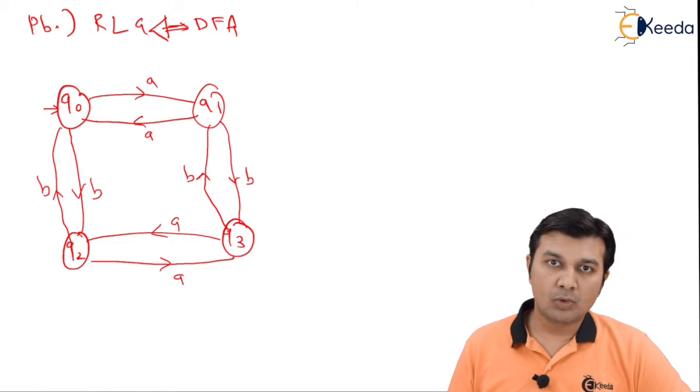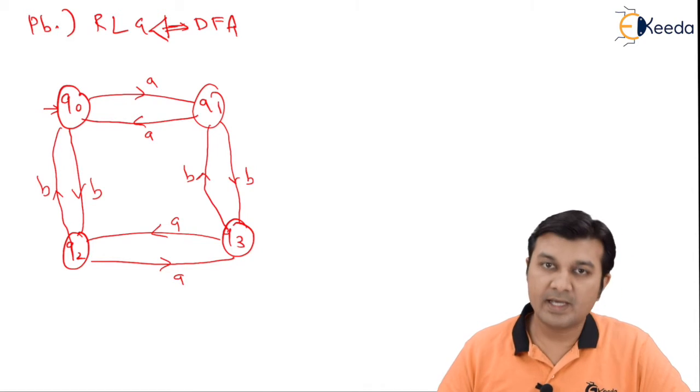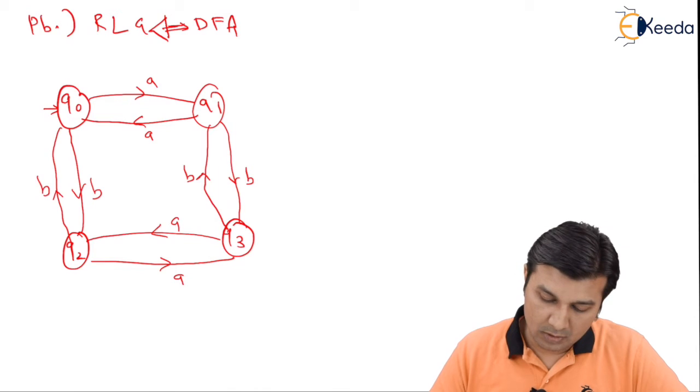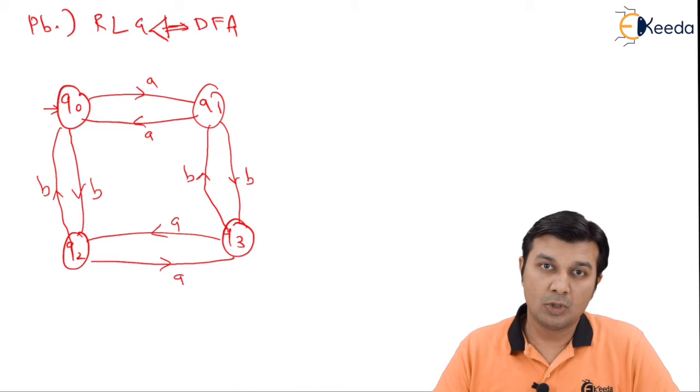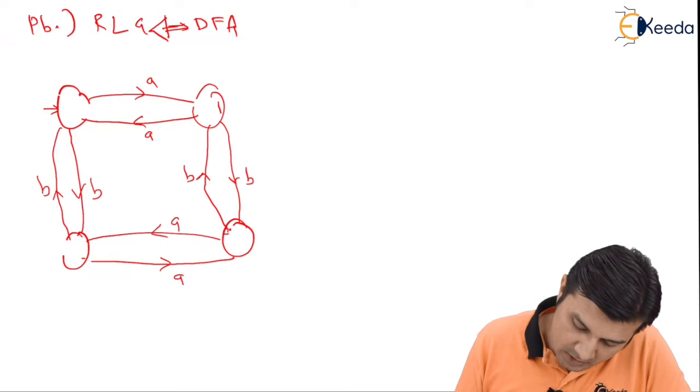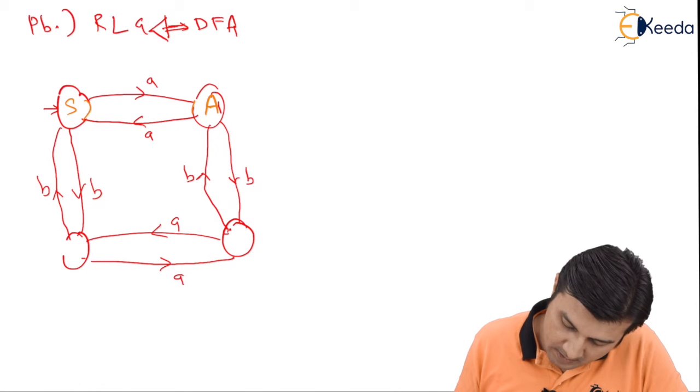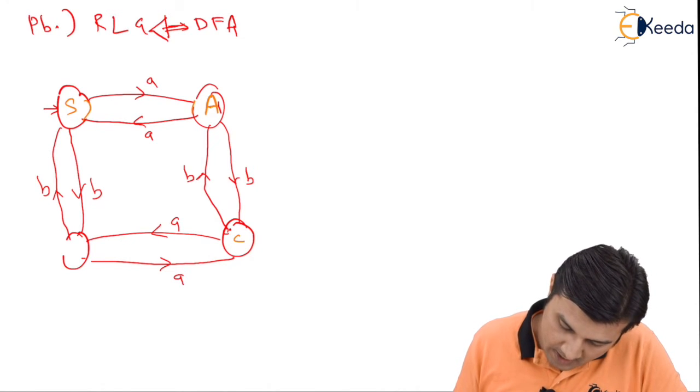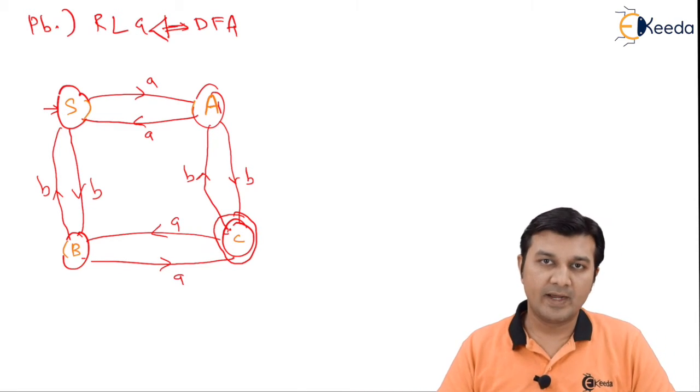If we look at the rules, we see the first and foremost thing: if q0 belongs to the final state, then S is going to give me epsilon. The first thing is renaming the diagram. Instead of q0, q1, q2, q3, we are going to relabel it as S, A, B, and C, because it looks more like productions then.